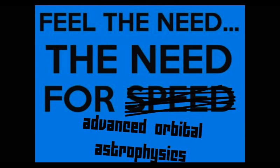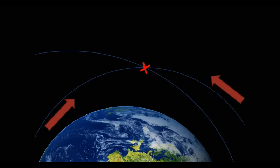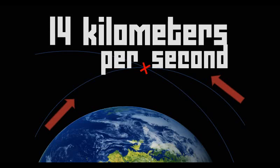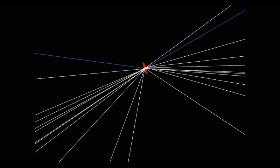If one hits an object traveling in the opposite direction, the impact speed will be 14 kilometers per second. You wouldn't even see it coming, or see it at all.